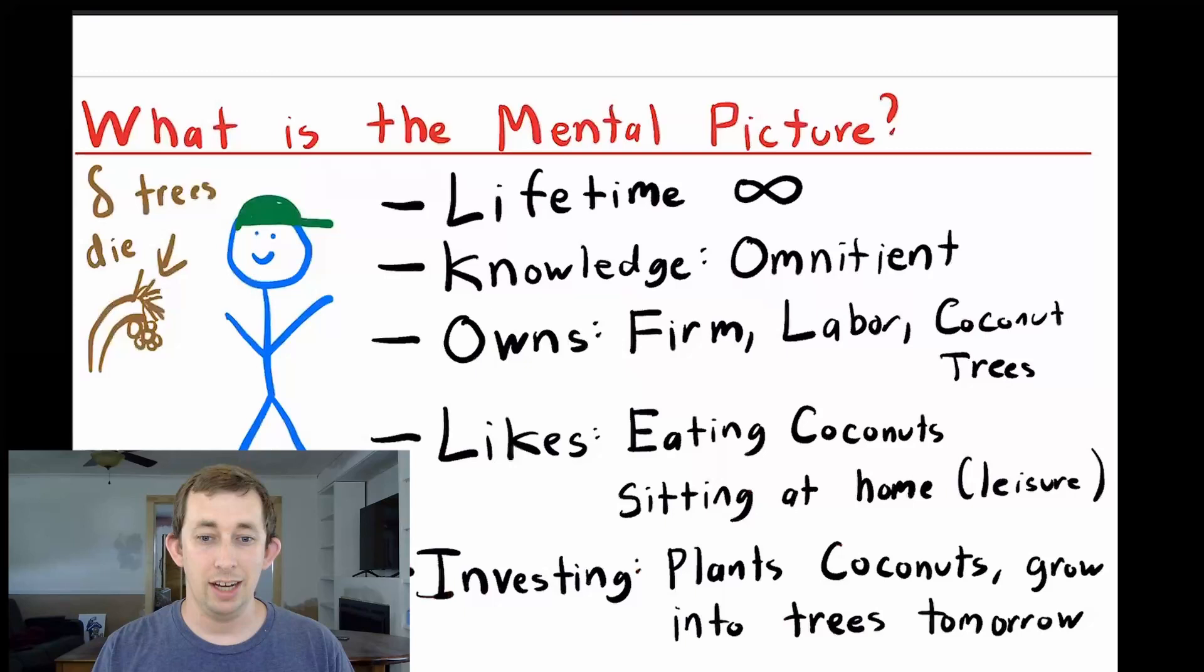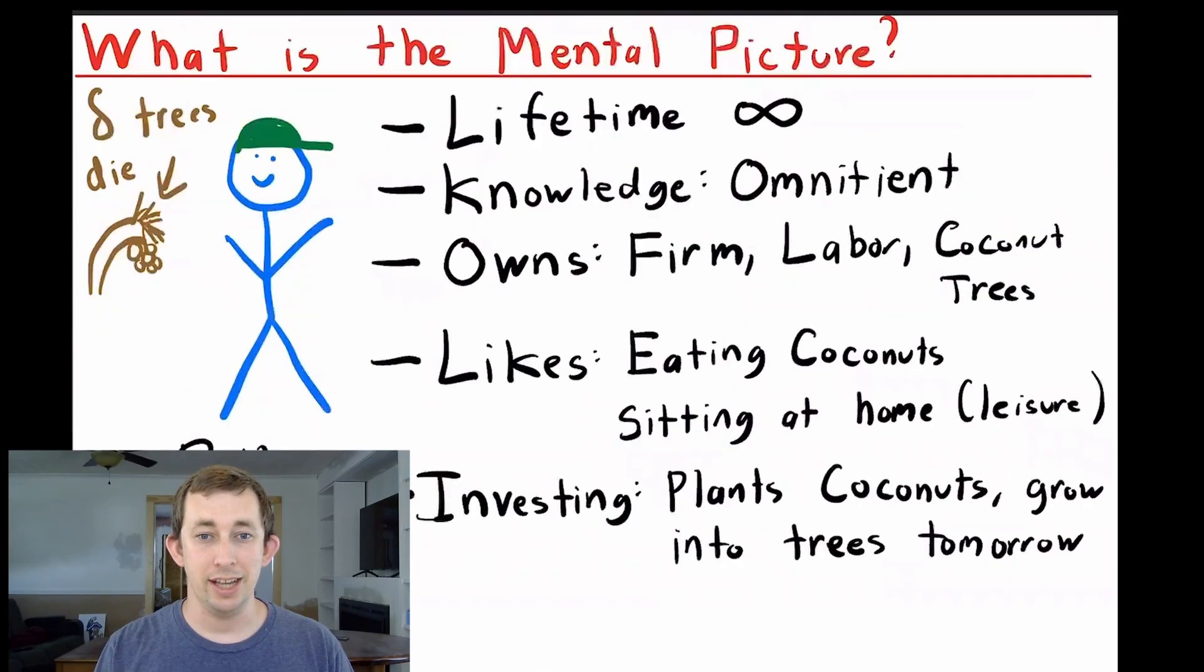First, let's review the setup. The mental picture we have for the neoclassical growth model is we have Bill. Bill lives forever and knows everything. Bill owns his own firm, his own labor, and coconut trees that he rents out to the firm. Bill likes both eating coconuts and sitting at home or leisure.